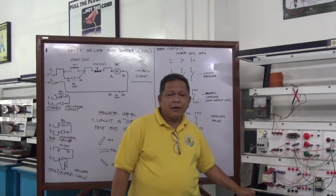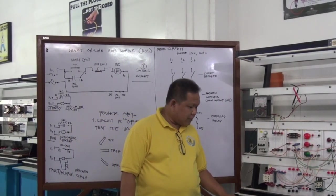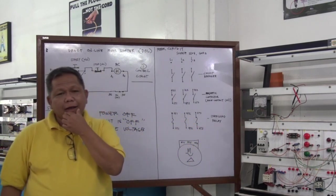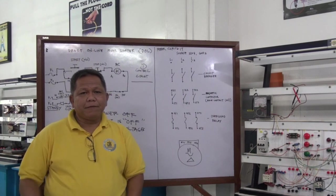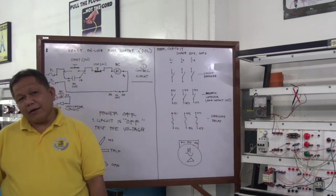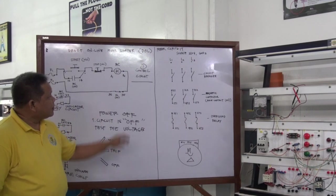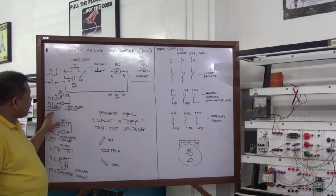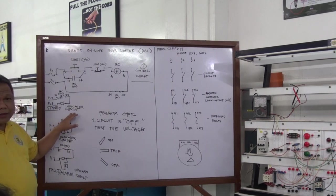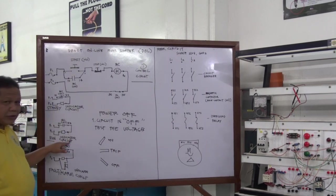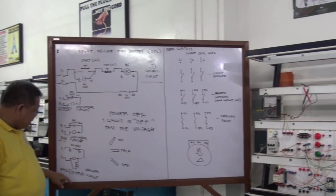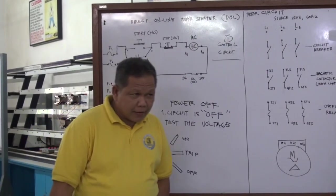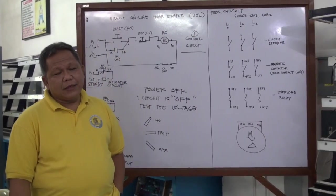Good day. We are now going to continue our activity. Previously, we have constructed four circuits: the control circuit, the standby indicator circuit, the run indicator circuit, and the default alarm indicator circuit. This time, we are going to connect the motor circuit.